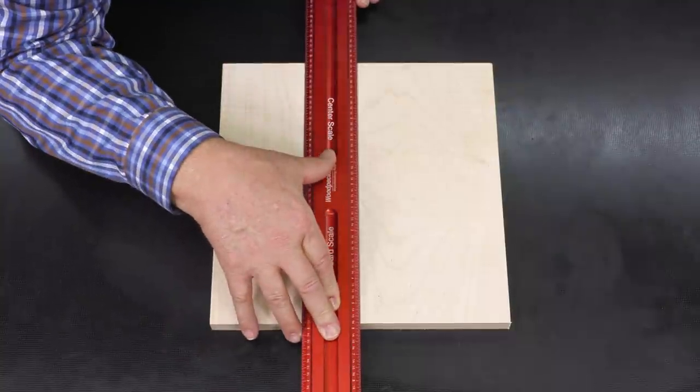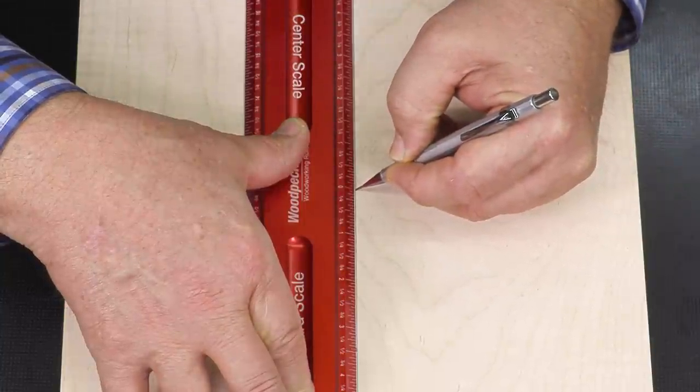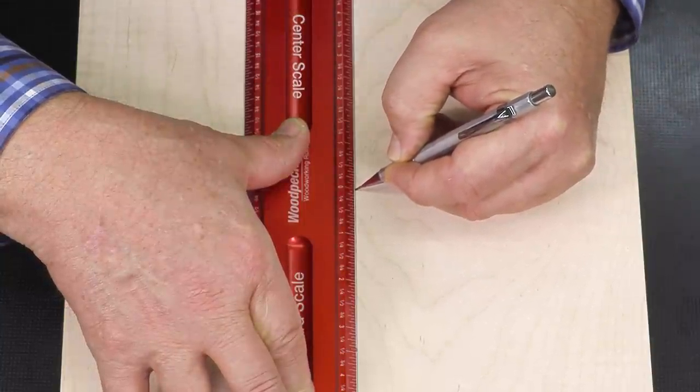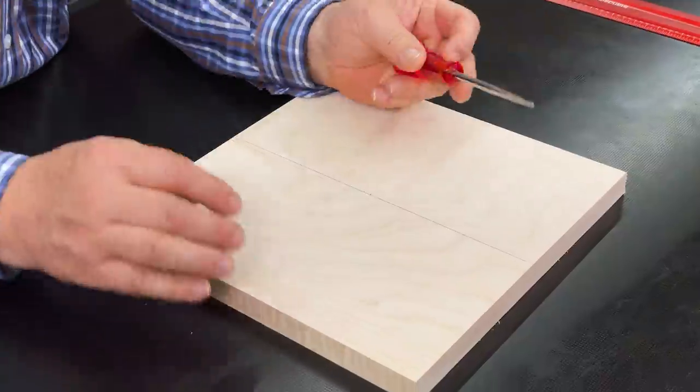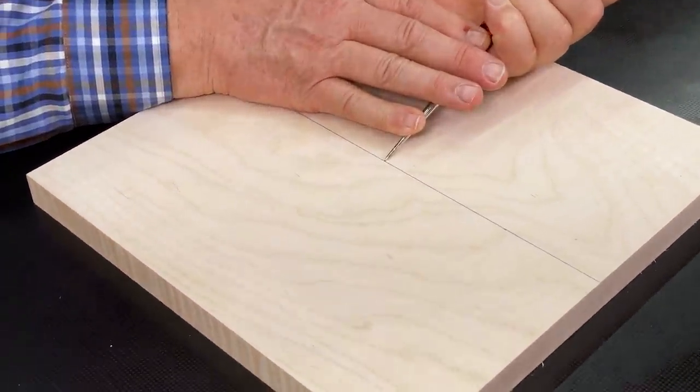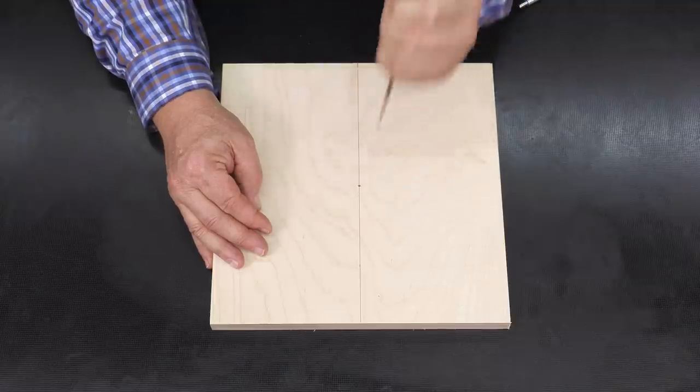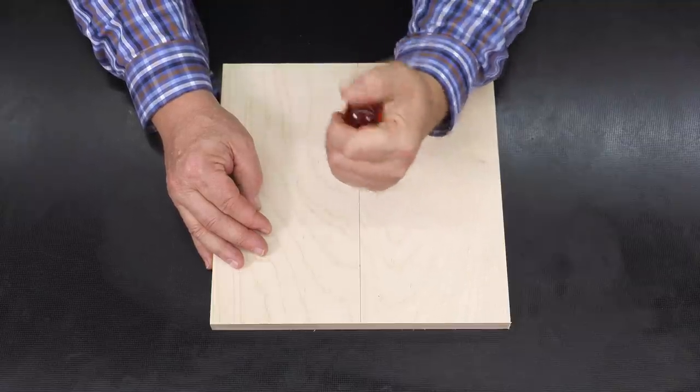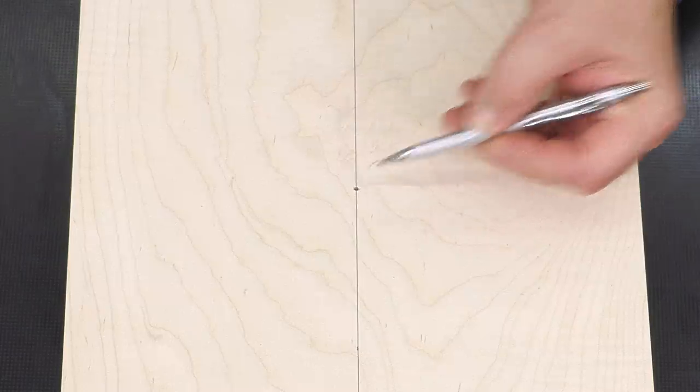But everything is going to work off of that point right there. That is the center of our clock. And so now that we've established that I'm going to take an awl and I come right in there right on that point and set my center. Now when we get to the point of mounting the works for the clock that will be the center point for my drill.